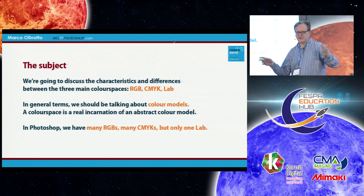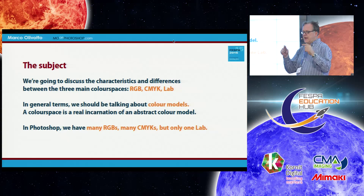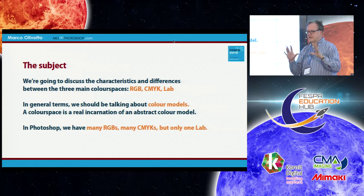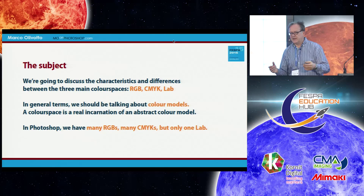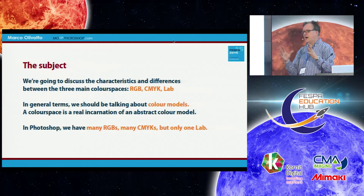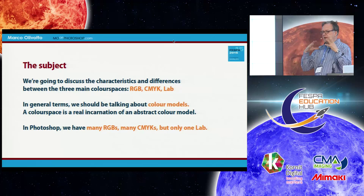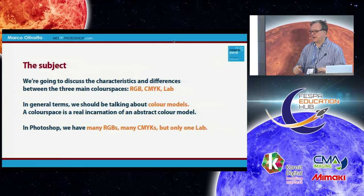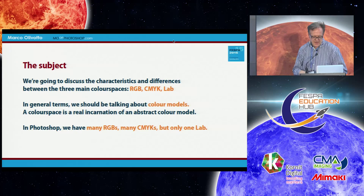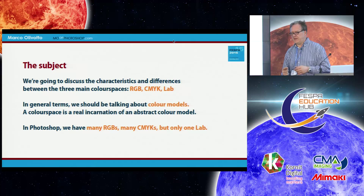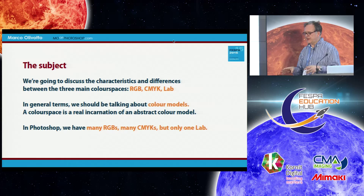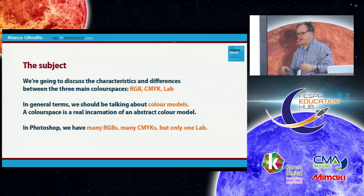There are lots of RGB variants, and moreover there is one particular RGB for every display in the world. A color space is the real incarnation of an abstract color model — like a human being. We all know how we are made, but we are all different. In Photoshop we have many RGBs, many CMYKs, but only one LAB. So while it's easy to mistake one RGB for another in color management, it's impossible inside Photoshop to get LAB wrong, because it is unique.